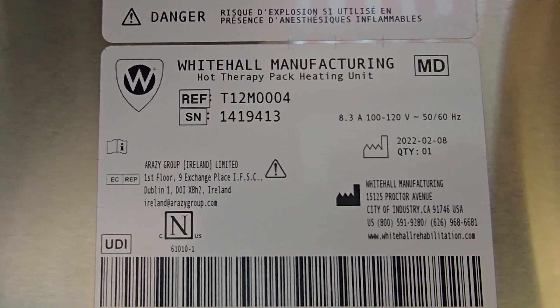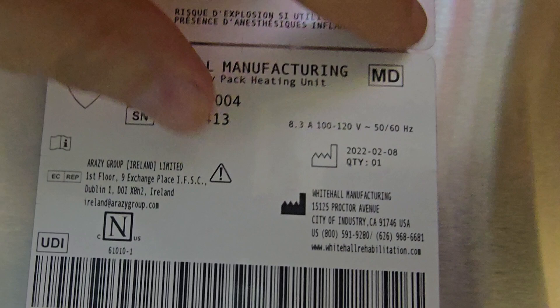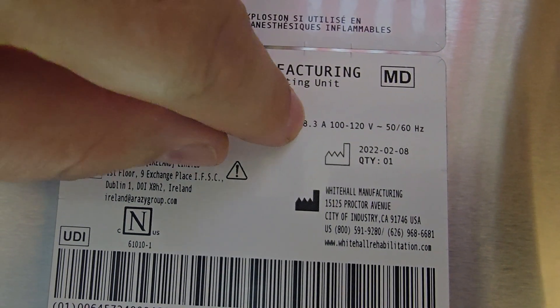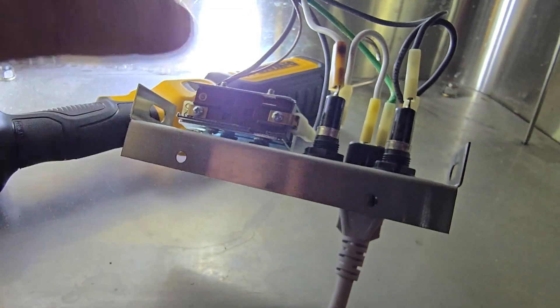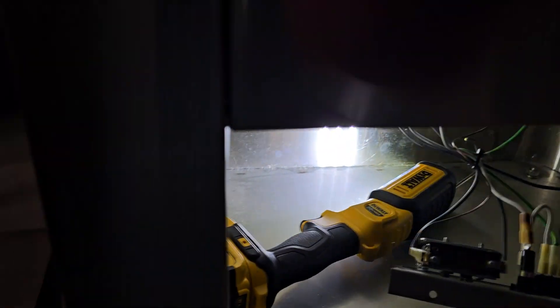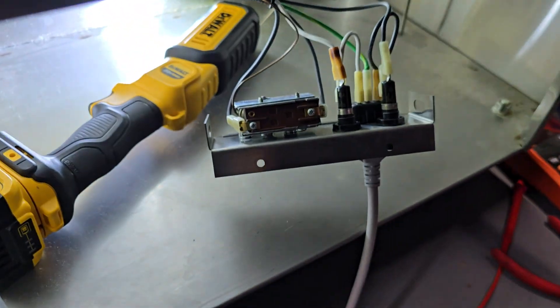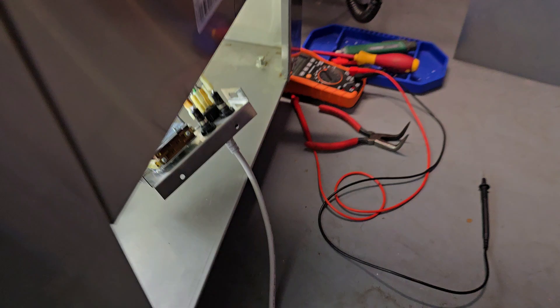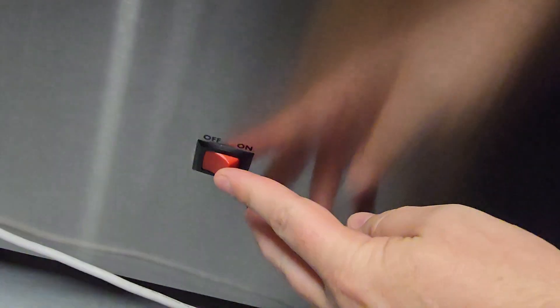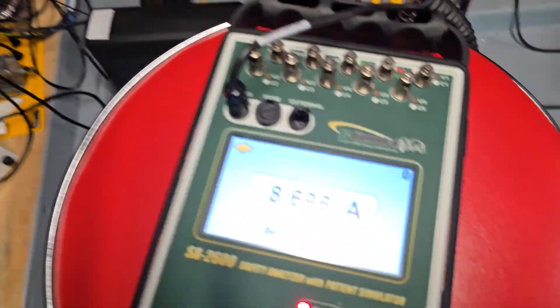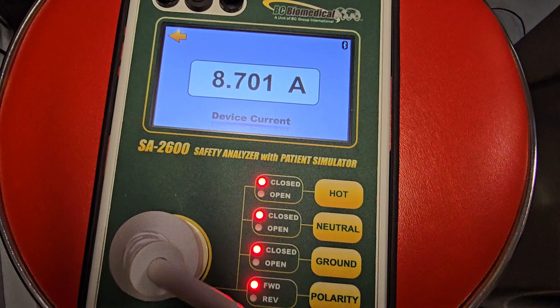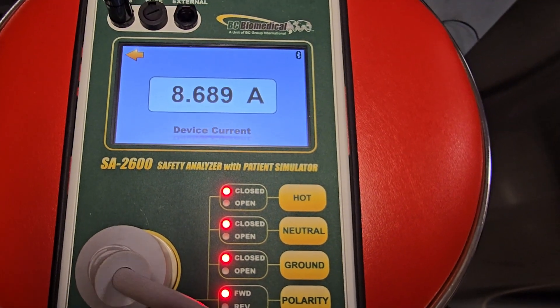But anyway this guy right here it says that it pulls 8.3 amps. So I reset the thermal fuse, the plunger is reset, down here I have AC mains plugged back in. I have checked the fuses and they're both good. So now let's check we have lights and remember it was eight point something amps.